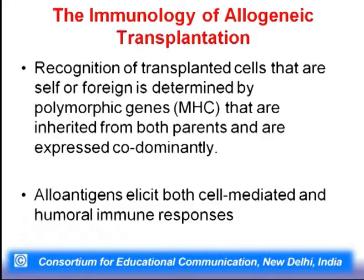There is a major limitation: we cannot have success if we are not careful. We have to assess the body's immune response before we come to any conclusion. The immunology of an allogenic transplantation involves recognition of transplanted cells — they may be self or foreign — and this recognition is done by polymorphic genes belonging to the major histocompatibility complex. MHC molecules are inherited from both parents, meaning they are co-dominantly expressed. Alloantigens can elicit both humoral response as well as cell-mediated immune response.